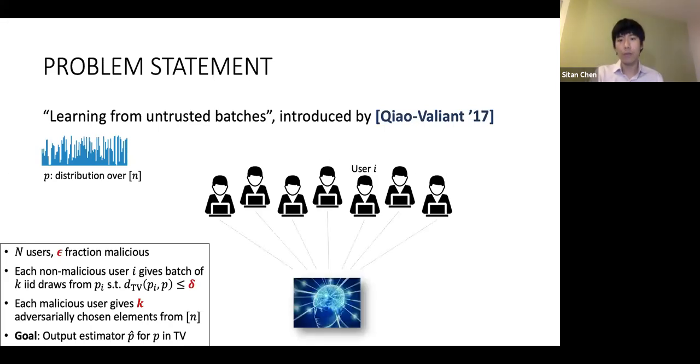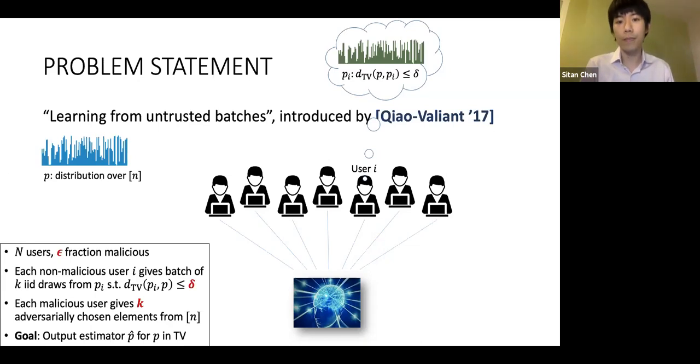Every non-malicious user is going to send me k IID draws from some distribution p_i, which is at most delta far from p. Each of these users will have some different p_i. On the other hand, every malicious user is going to just give me k arbitrary, perhaps adversarially chosen elements from the underlying domain.